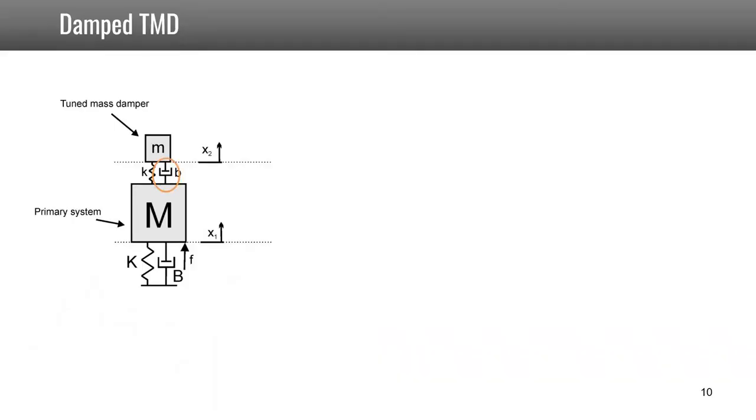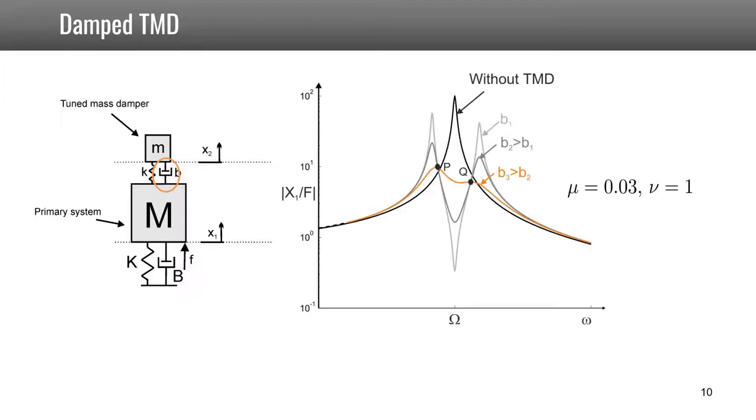When we are adding a damper in our tuned mass damper, we will have the following effect. The two peaks on the left and on the right will start to decrease until they reach an optimum. If you still increase the damping after, you will see one peak reappearing, and with quite low damping.